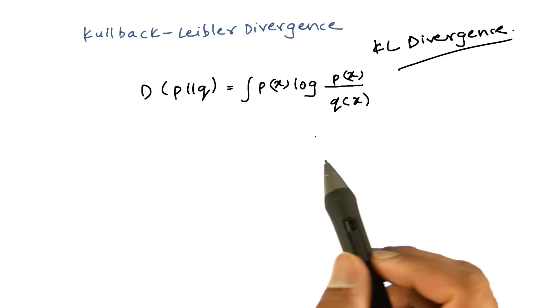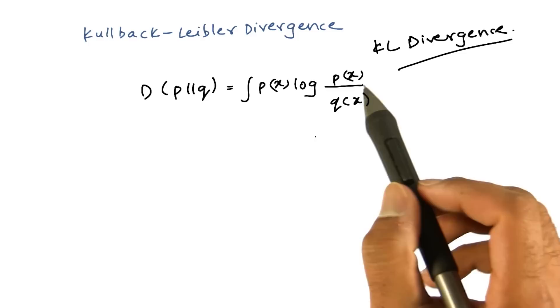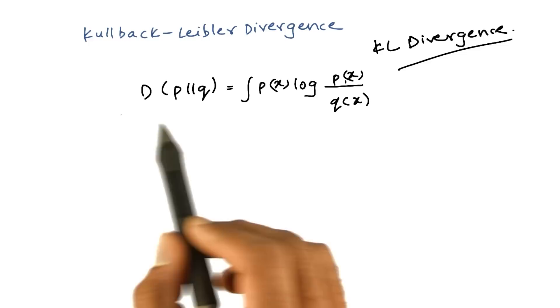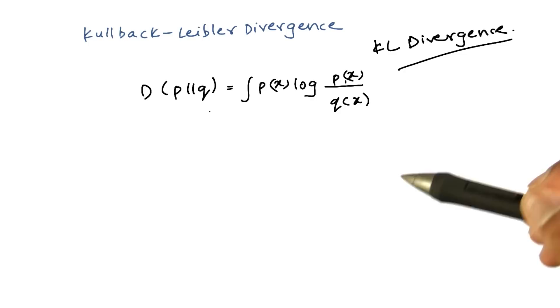The KL Divergence is given by this particular formula. It is always non-negative and zero only when p equals q. When p equals q, the log of one is zero, and that's why the distance is zero. Otherwise, it is always some non-negative quantity. So it serves as a distance measure, but it is not completely a distance measure because it doesn't follow the triangle law.